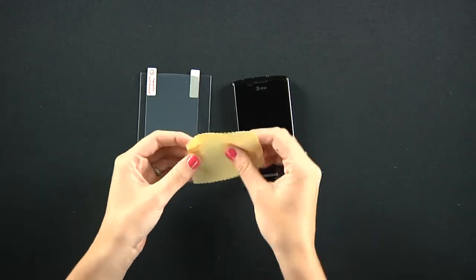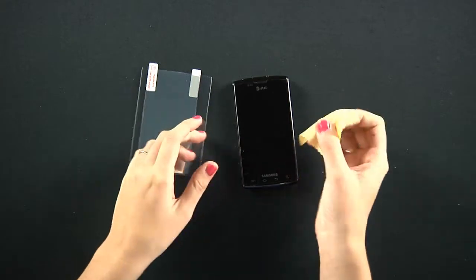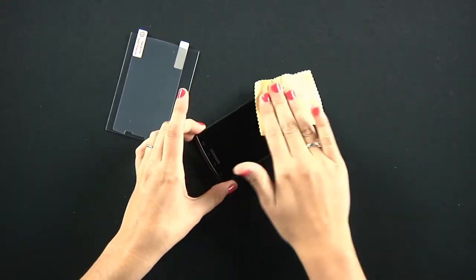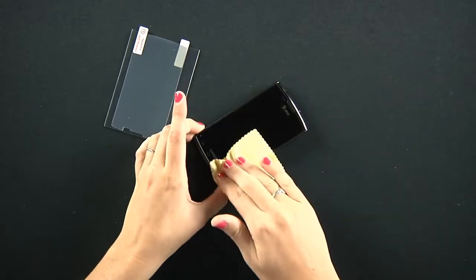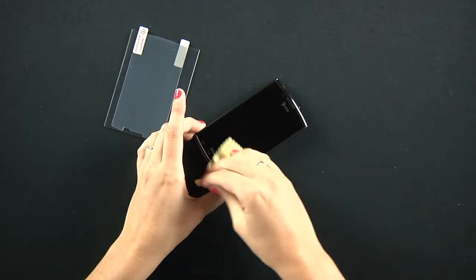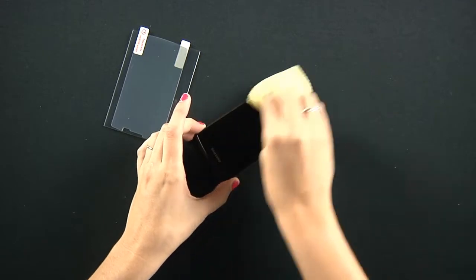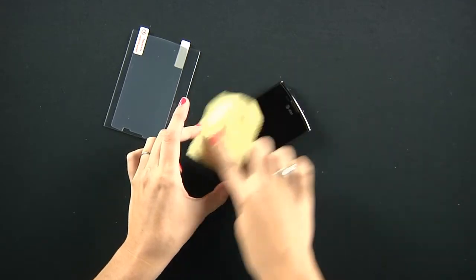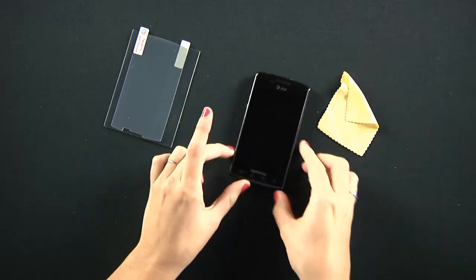The screen protector comes with a microfiber cloth to clean your screen with. It's very important to clean your screen and get off any excess debris, dirt, or fingerprints that may be on it because those will be trapped in between the screen protector and your phone and you don't want that to happen. So there we go.